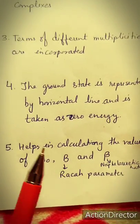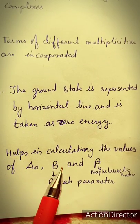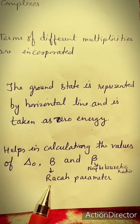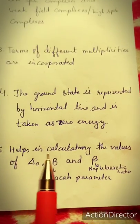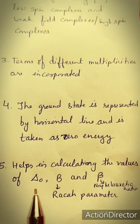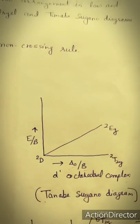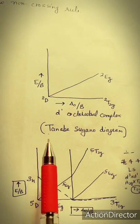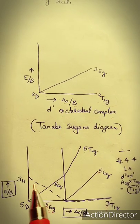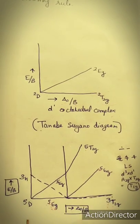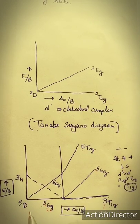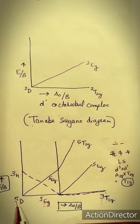Tanabe-Sugano diagrams help in calculating the values of δO, B, and β, where B is the Racah parameter representing inter-electronic repulsion, and β is the nephelauxetic ratio. So δO, B, and β can be calculated with the help of Tanabe-Sugano diagrams. In summary, both Orgel and Tanabe-Sugano diagrams are used for electronic spectra of transition elements, but Tanabe-Sugano diagrams are more advanced and can study electronic spectra of both high spin and low spin complexes.